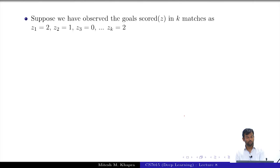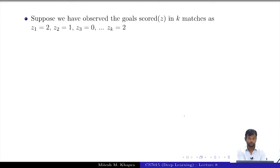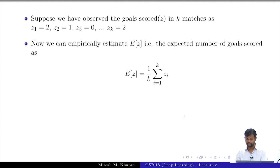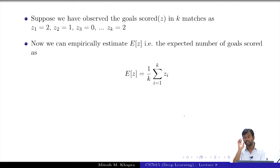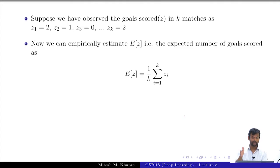Suppose we observed the goals scored in k football matches. If asked for the expected number of goals scored, you would take the average — that is an empirical estimate of the expectation. These are the k observations given to you. As you watch more matches, you get a better estimate. This is how we do it empirically.